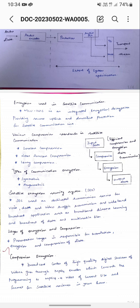Various compression standards in satellite communication include lossless compression, near lossless compression, and lossy compression. Types of communication encryption include symmetric and asymmetric.